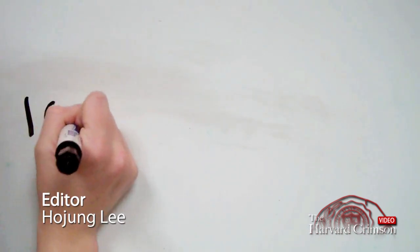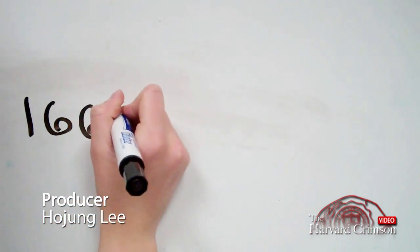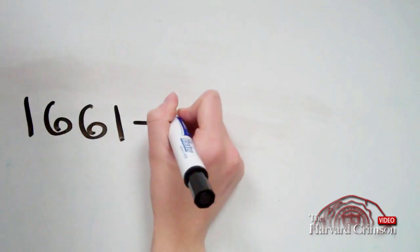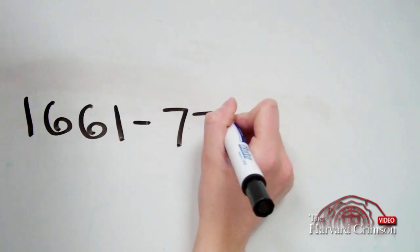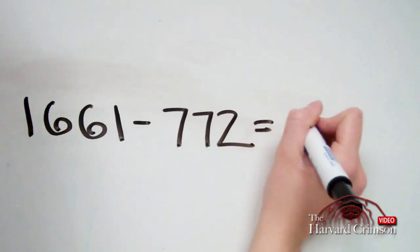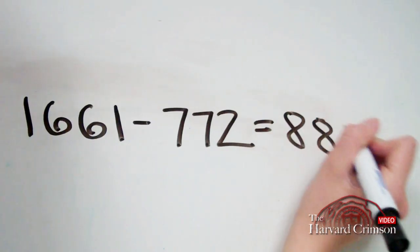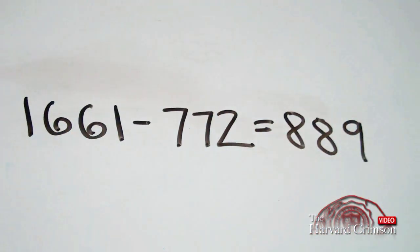Assuming the admissions office wants to replicate the size of this year's freshman class of 1,661 and wants to make sure there's room for the 772 students who have already been admitted under the Early Action program, there are 889 spots left in the freshman class.